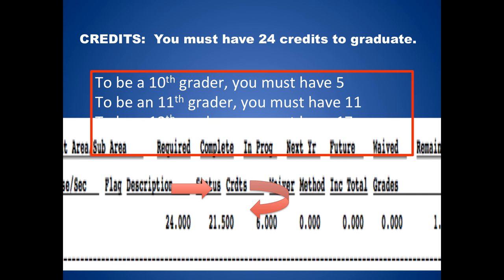You must have 24 credits to graduate. Many of you come to guidance because you are not showing your correct grade in Skyward — this is simply a matter of credits. To be a 10th grader, you must have earned 5 credits. To be an 11th grader, you must have 11 credits. And to be listed as a senior, you must have at least 17 credits. On your report, across the first line at the top, you will find a column labeled Status Credits right in the middle. Underneath this column will be your current number of cumulative credits — any class you have taken for high school credit is counted in this number.